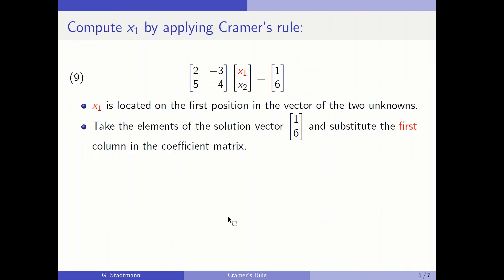Let's compute x1. x1 is located on the first position of the vector of the two unknowns. Therefore Cramer's rule tells you: take the elements from the solution vector and substitute the first column of the coefficient matrix. So you should take the elements 1 and 6 and insert them into the first column because x1 is on the first position.